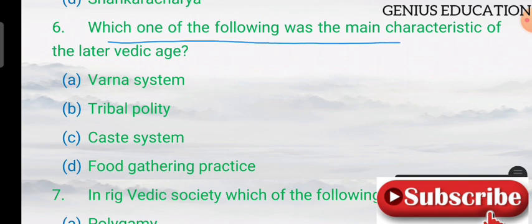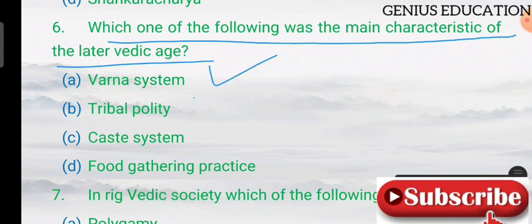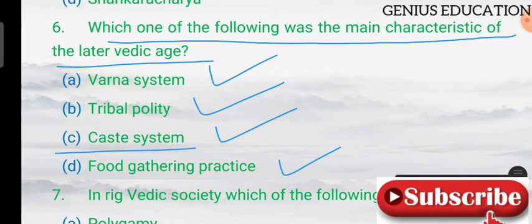Question 5: which one of the following was the main characteristic of the later Vedic age? Options are varna system, tribal polity system, caste system, and food gathering practices. The answer is C — caste system.